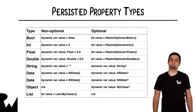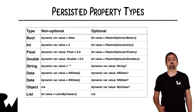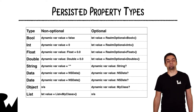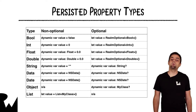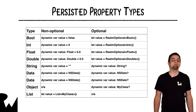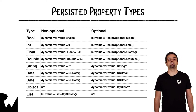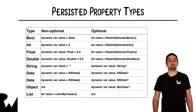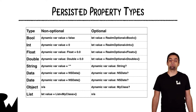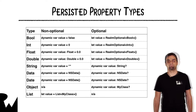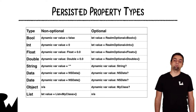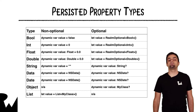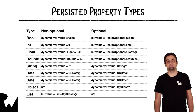Of course you can't persist just any property type. You can persist primitive types like bool, int, float, and double. If you provide a default value you just define those properties as dynamic and Realm takes care to persist the data automatically. If you want optional primitive types in your model class you have to use the Realm-provided RealmOptional type. You can also persist further data types like string, date, and data. Since those are objects you just need to declare them dynamic and Realm will do all the heavy lifting for you.